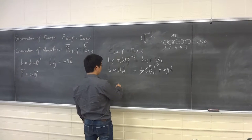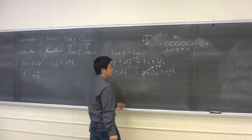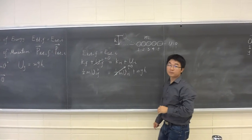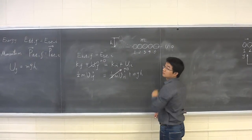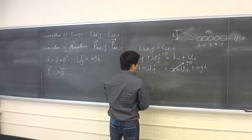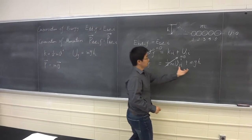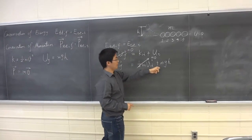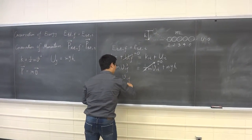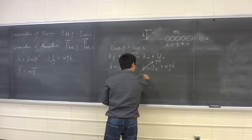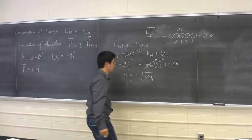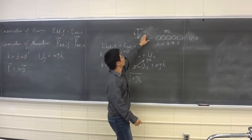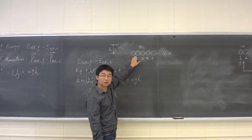So eventually we get a single equation. Because all five balls are identical, they all have the same mass M, so we can cancel M. Eventually we find that V₁F equals the square root of 2gH. This is the final velocity of the first ball right before it strikes the second ball, and it is going to strike the second ball with this velocity.